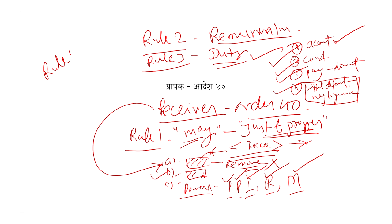Ab Rule 4 kya hai dekhiye — Rule 4, rule 4 kara hai: enforcement of receiver's duty. Generally dekhiye, duties enforceable nahi hoti. Duties set of moral principles hain — hamara man karega, hamara nahi man karega. But yahan pe, prapak jo hai — receiver jo hai — iski duty ka enforcement bhi kara diya jayega. Yeh Rule 4 mein likha hua hai. Toh iski duty ko enforce karane ke liye kya karna hai Rule 4 mein likha hai.